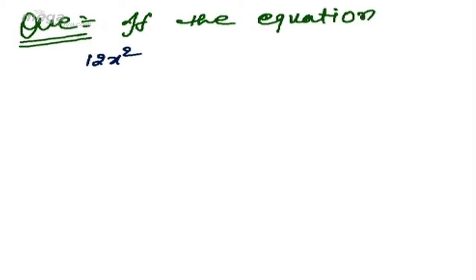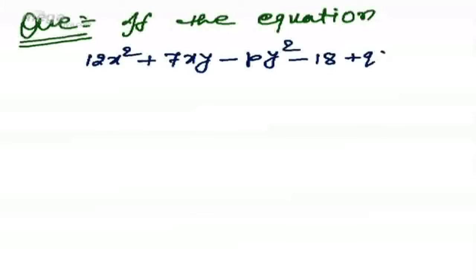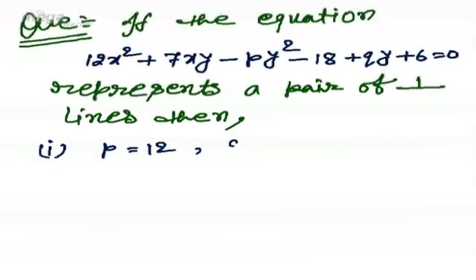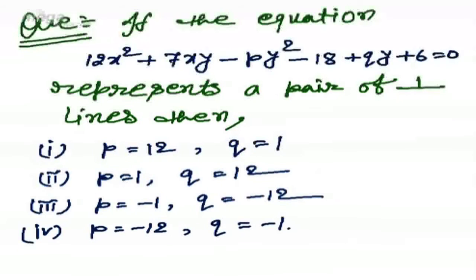If the equation 12x² + 7xy - py² - 18x + qy + 6 = 0 represents a pair of perpendicular lines, then find p and q. Options: (1) p = 12, q = 1; (2) p = 1, q = 12; (3) p = -1, q = -12; (4) p = -12, q = -1.